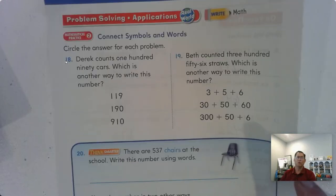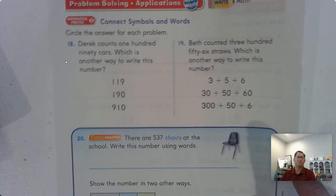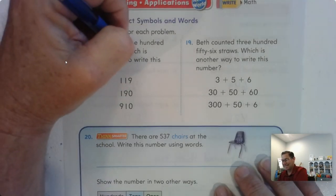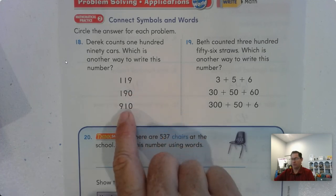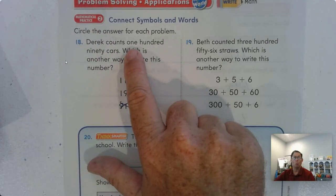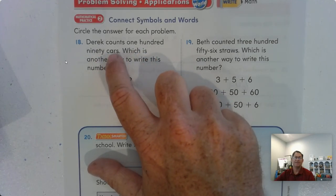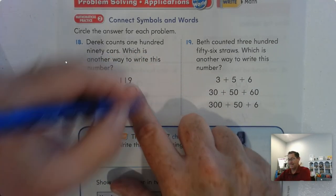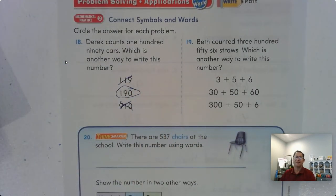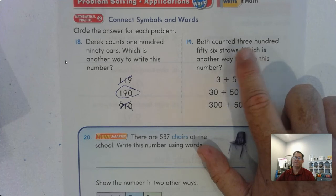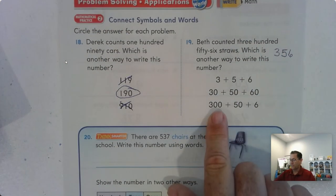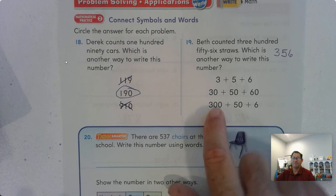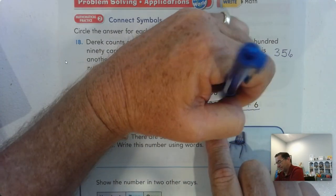Page 80, connecting symbols and words. Circle the answer for each problem. Derek counts 190 cars. I can eliminate that one because it's not 900, it's 100. 90 cars. That's not 90, that's 19. So it's 190. Beth counted 356 straws. This is the only one that has three hundreds. None of these other ones have hundreds, so it has to be that one.